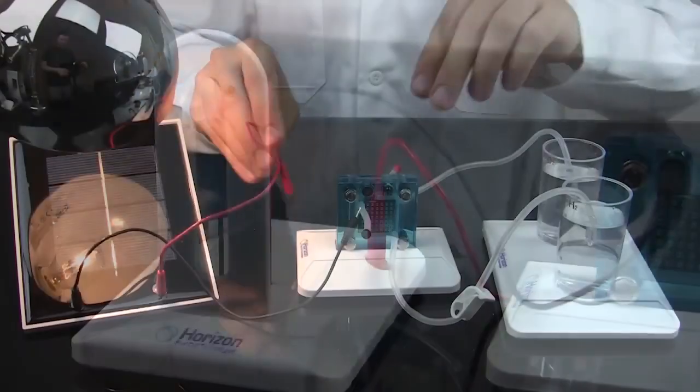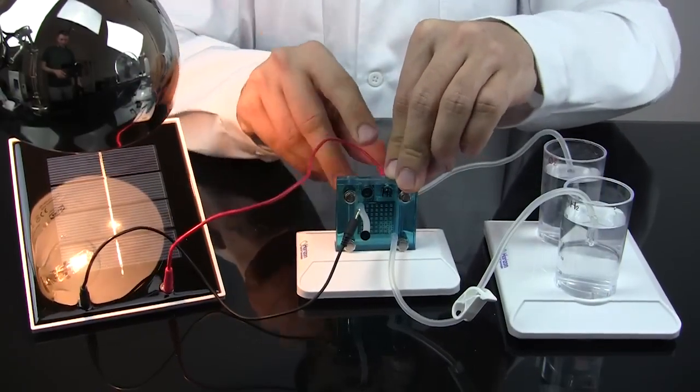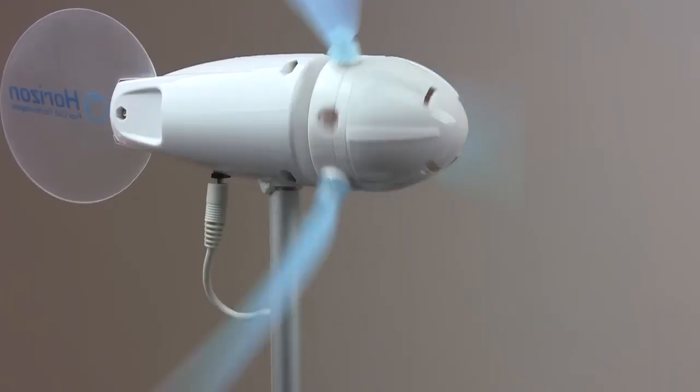If you don't want to use the battery pack, the reversible fuel cell can also make hydrogen using the solar panel or wind turbine.